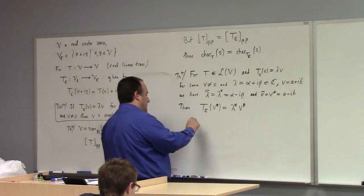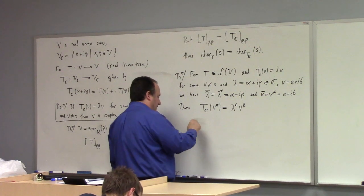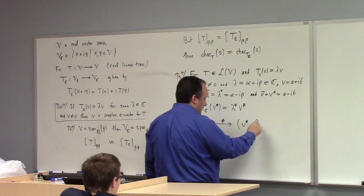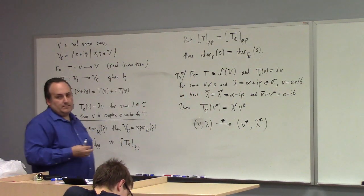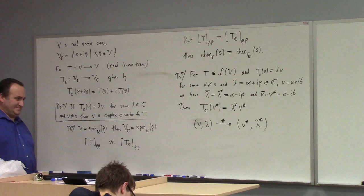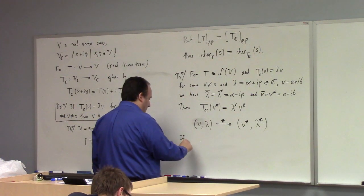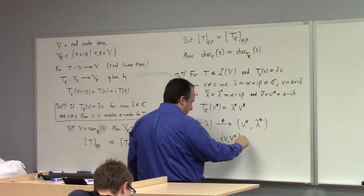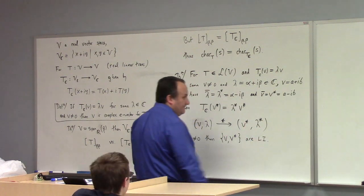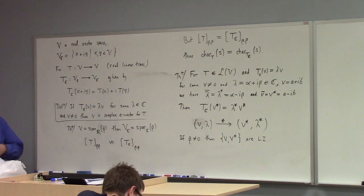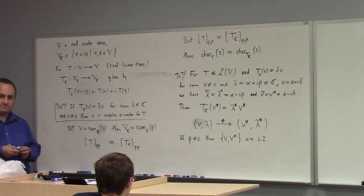So you have V with eigenvalue lambda, and complex conjugation gives you V-conjugate with eigenvalue lambda-conjugate. More than that: if beta is not equal to zero, then V and V-conjugate are linearly independent. Because if beta is not zero, then lambda-star is not equal to lambda — they're distinct. And we know that eigenvectors with distinct eigenvalues are linearly independent.